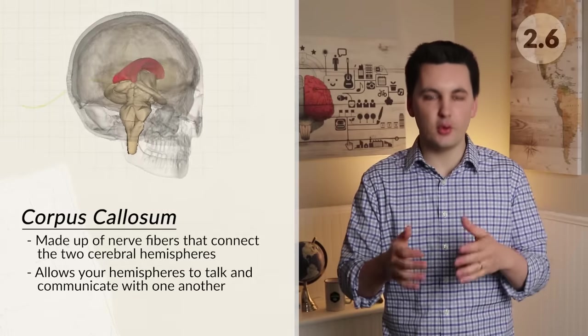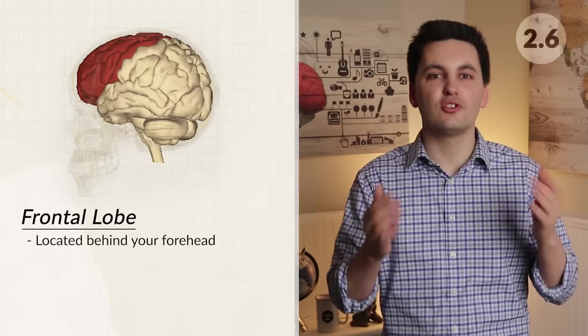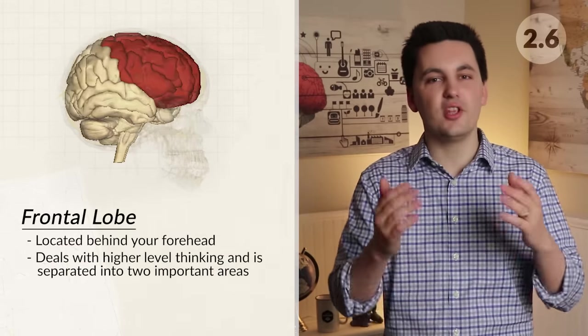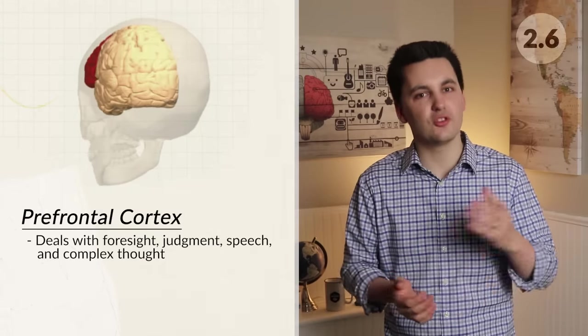The cerebral cortex can be broken down into four different lobes and two different hemispheres. The frontal lobe is located behind your forehead and deals with higher-level thinking. It is separated into two important areas: the prefrontal cortex, which deals with foresight, judgment, speech, and complex thought, and the motor cortex, which deals with voluntary movement and is located in the back of the frontal lobe. The left motor cortex controls movement on the right side of your body and the right motor cortex controls movement on the left side. Visually, we can see the functions of the motor cortex represented by the motor homunculus, which shows a visual representation of the amount of brain area dedicated to a specific body part.